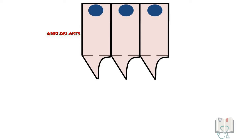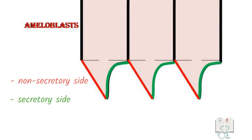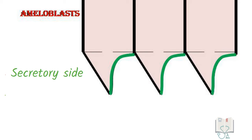This tomes process has a non-secretory side and a secretory side. The secretory side has again two parts, a proximal part which is of the flat surface on the ameloblast itself and a distal part on the tomes process.